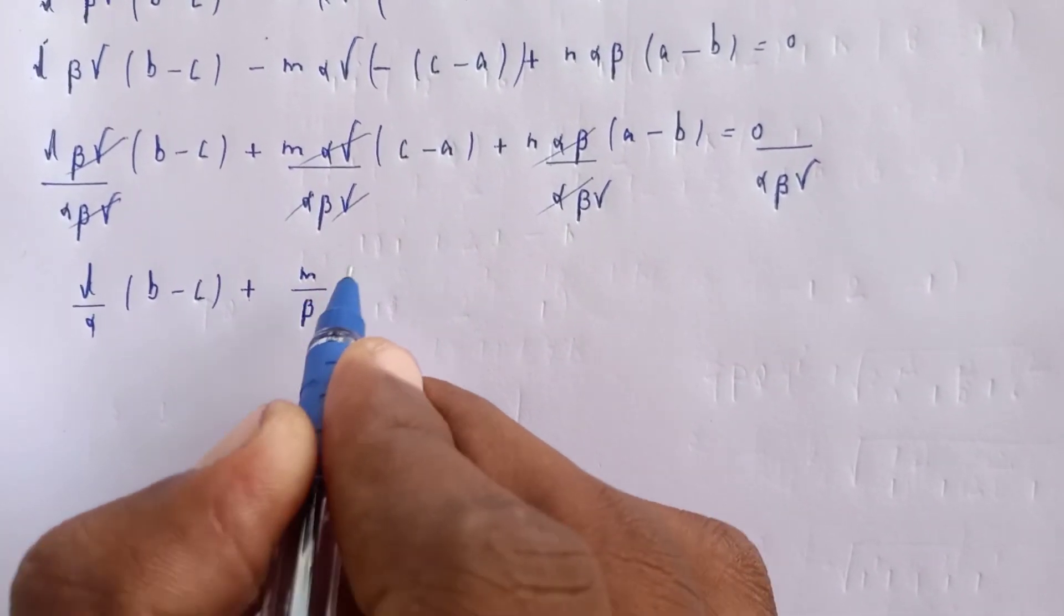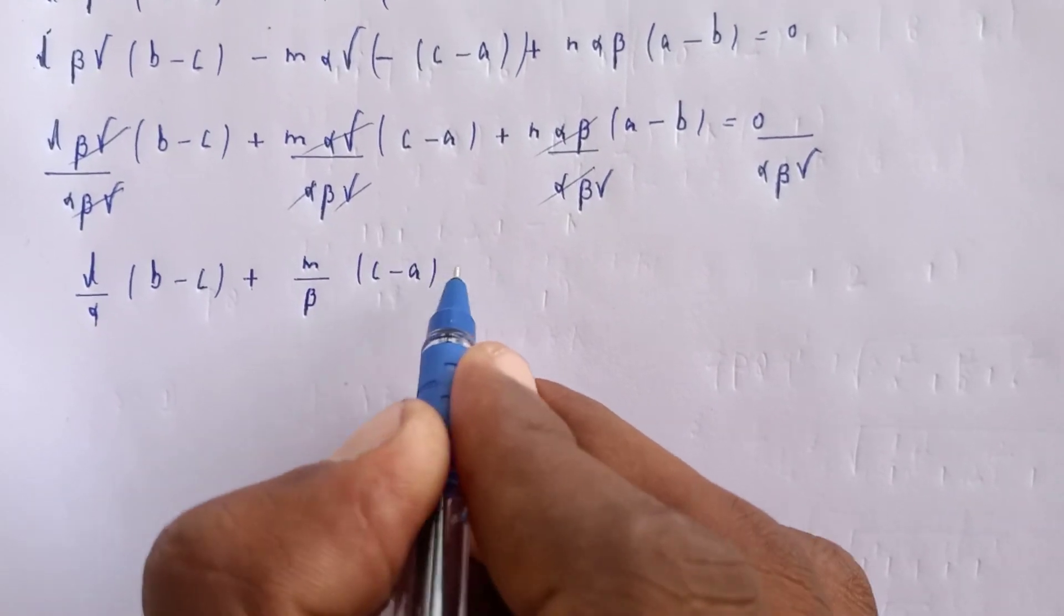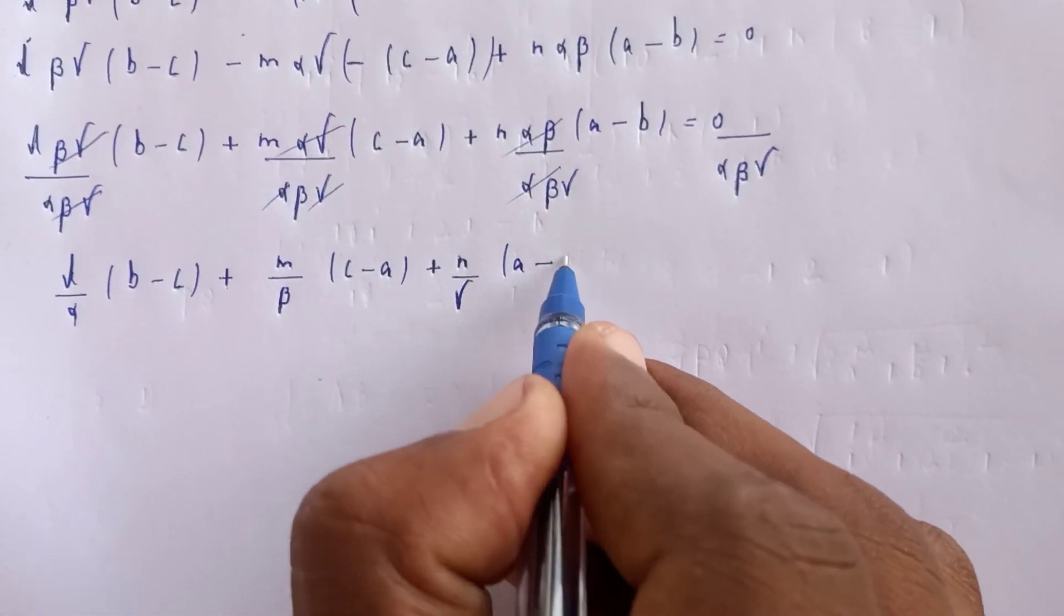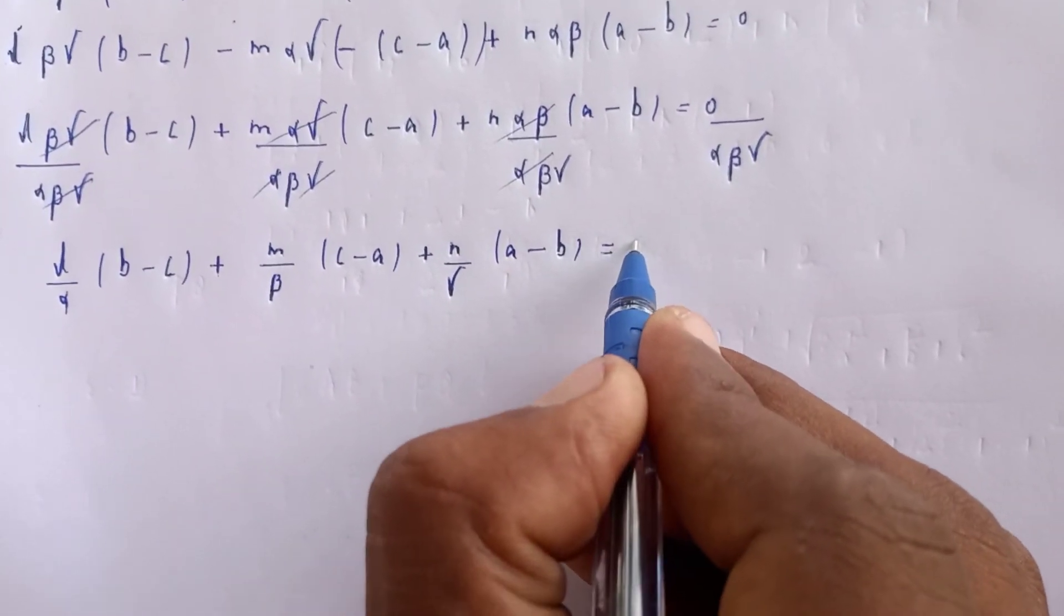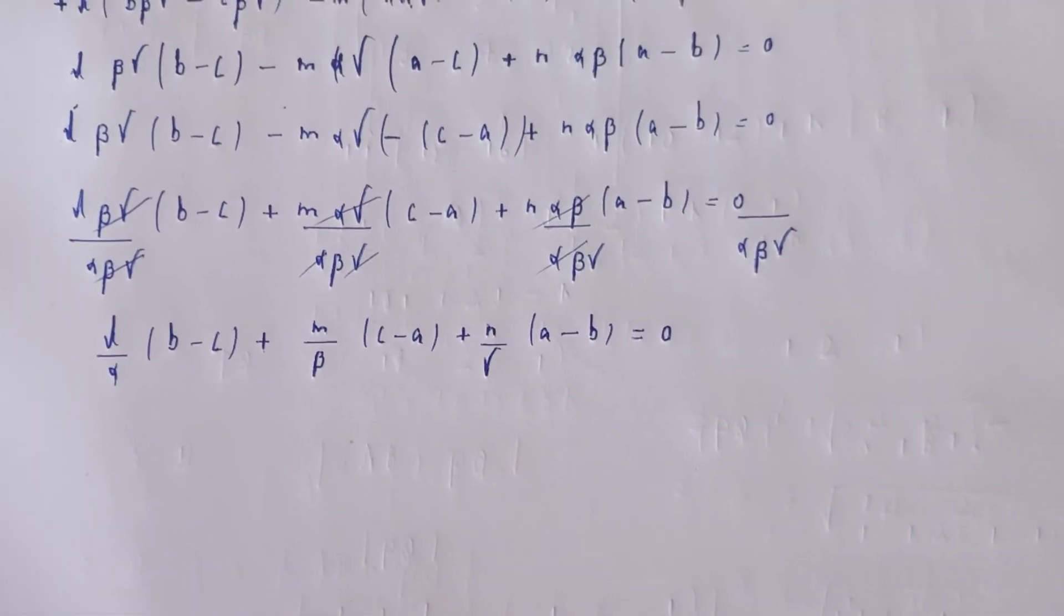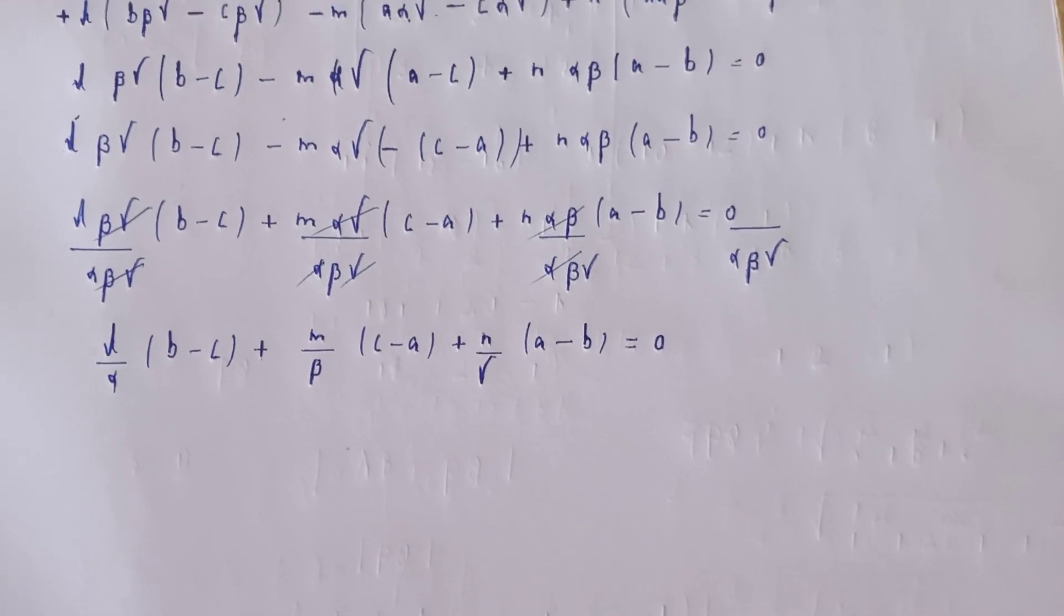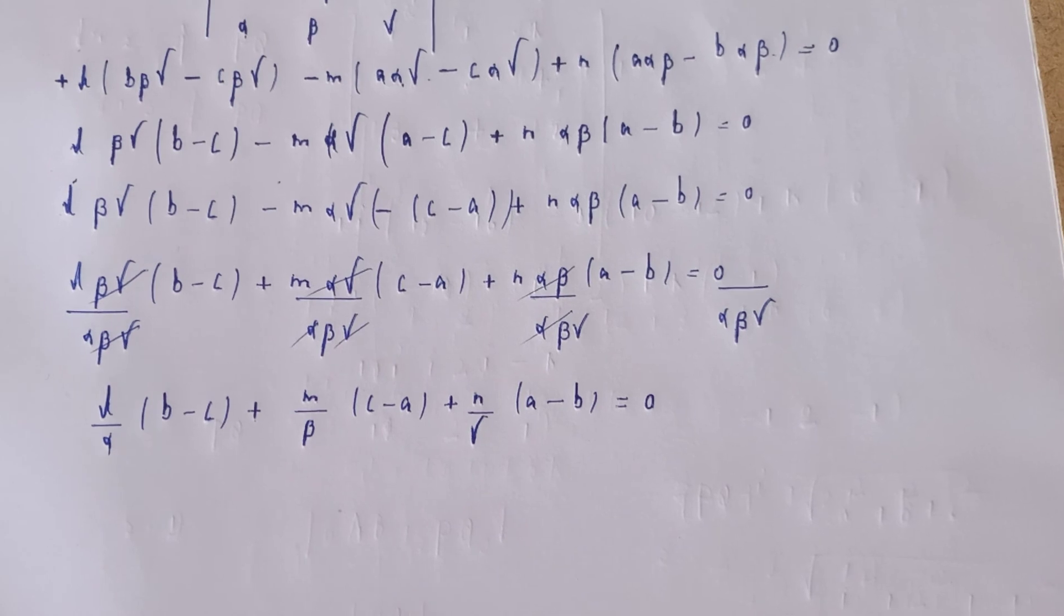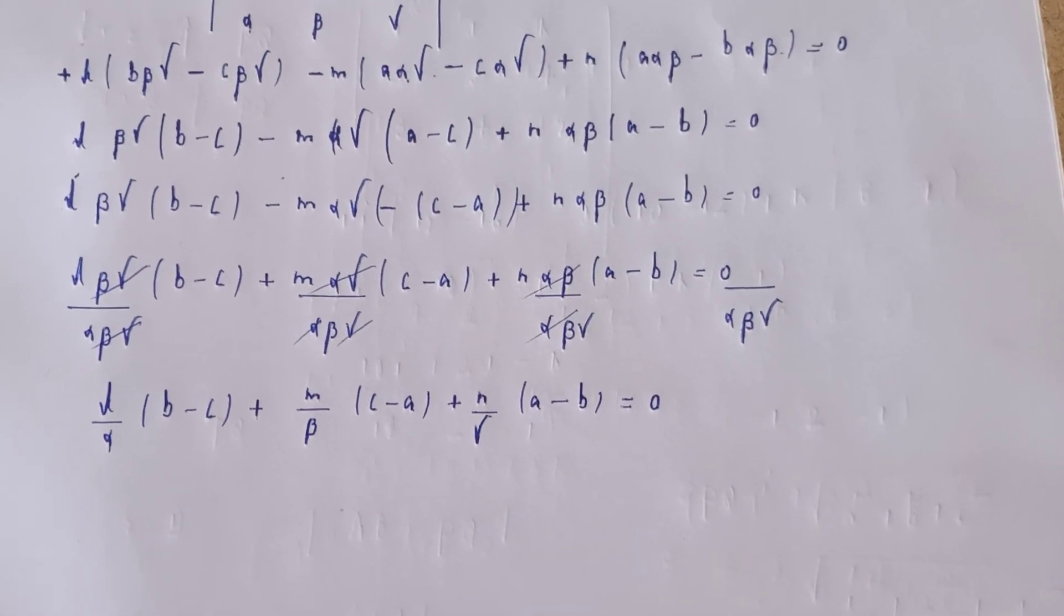This equals 0 divided by α·β·γ, which simplifies to our result. This is a simple but important problem that demonstrates the coplanarity condition for lines.